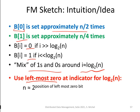If you have two FM sketches created for sets S and T, multisets of course, otherwise the counting of distinct elements is not so difficult, right? Then you obtain sketches BT and BS, and then the sketch that represents the set or the multiset union is simply given by doing a bitwise OR over these individual B vectors for the sketches.